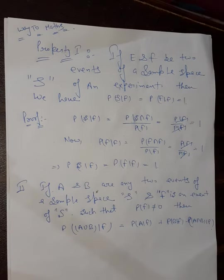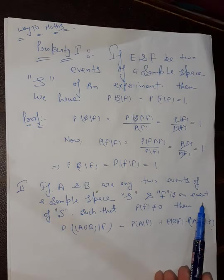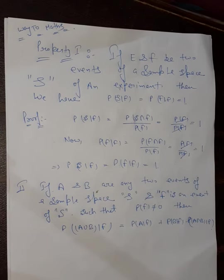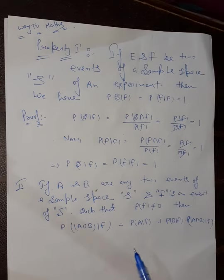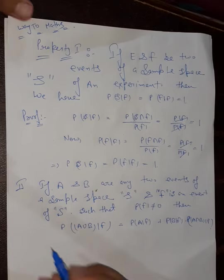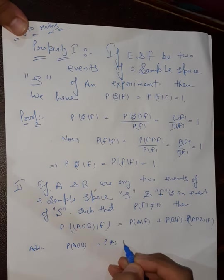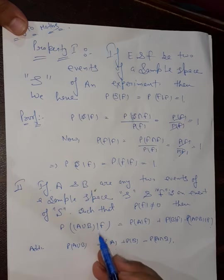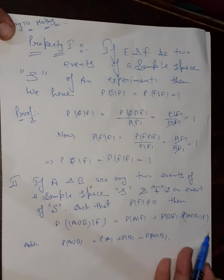Second property: If A and B are any two events of a sample space S, and F is any event of sample space S such that the probability of event F is not equal to zero, then the probability of A union B given F is equal to a specific result. We know from Plus 1 the addition theorem: P(A∪B) = P(A) + P(B) − P(A∩B). Now with the oblique F given, we solve accordingly.